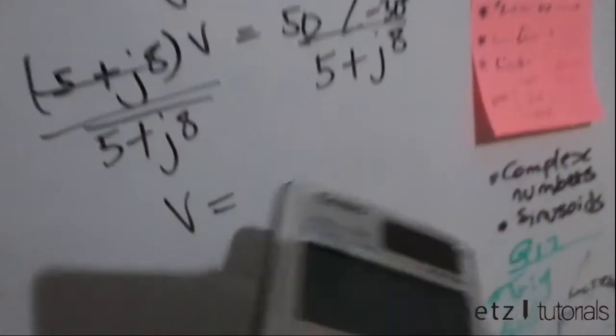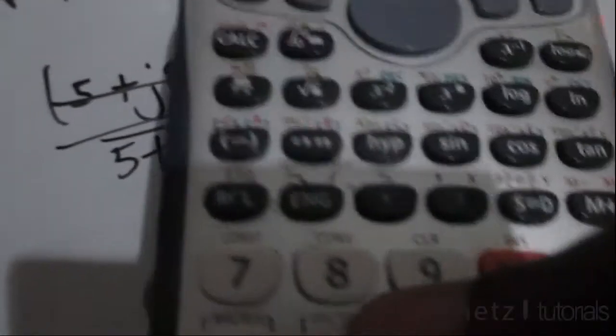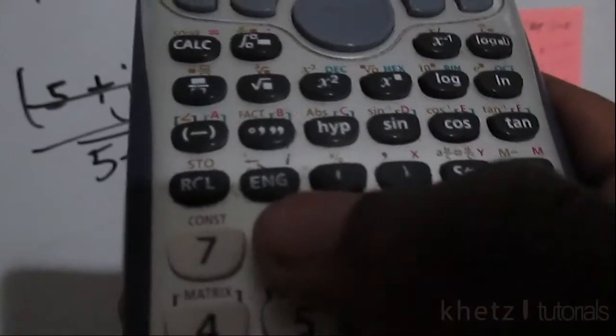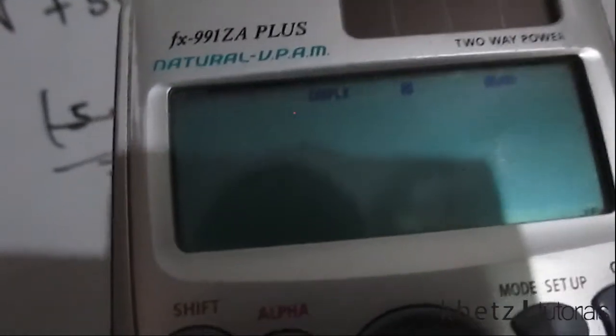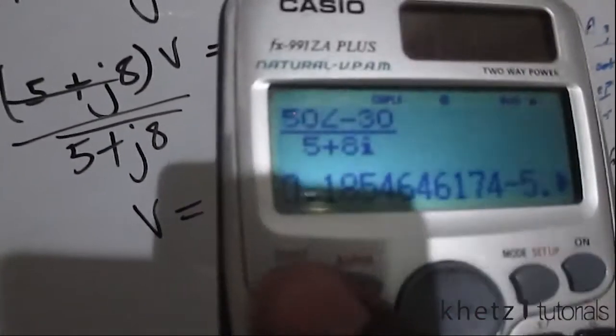To do that just say 50, shift the angle thing, negative 30, then divide by 5 plus 8i. So that is that, equals to.